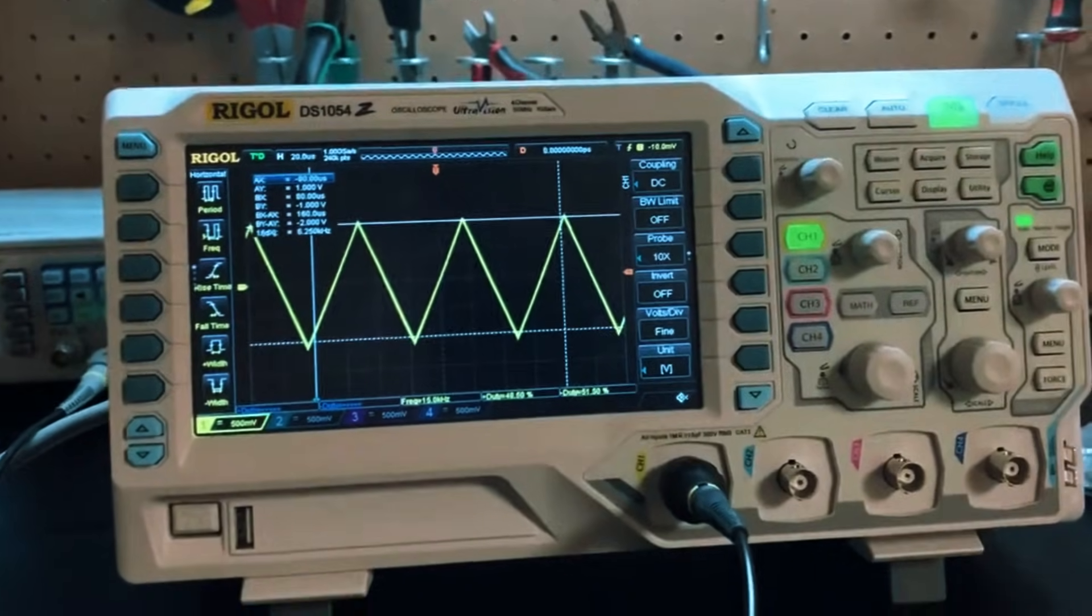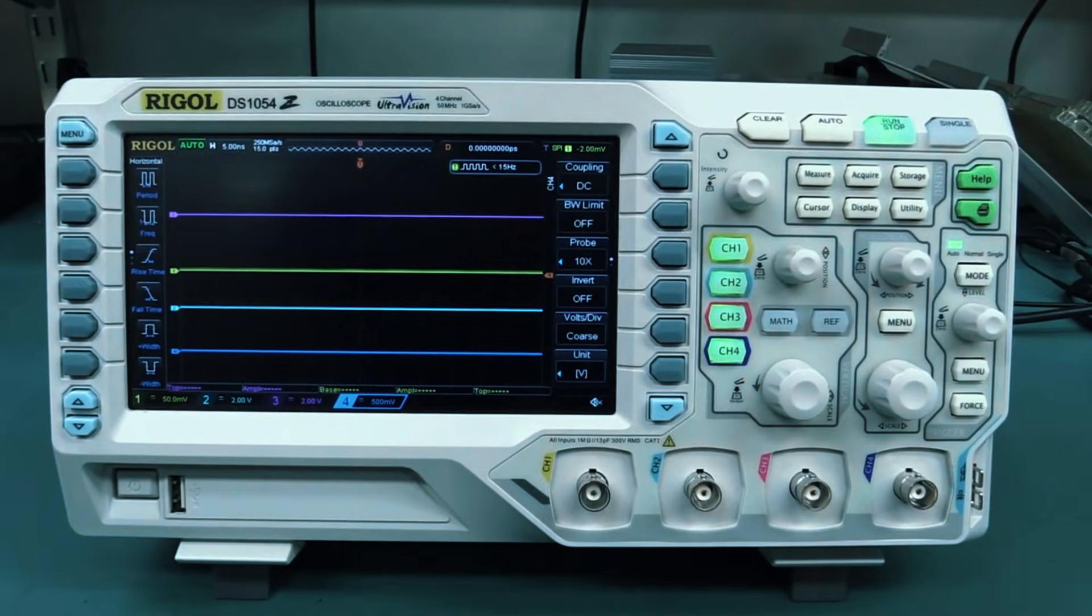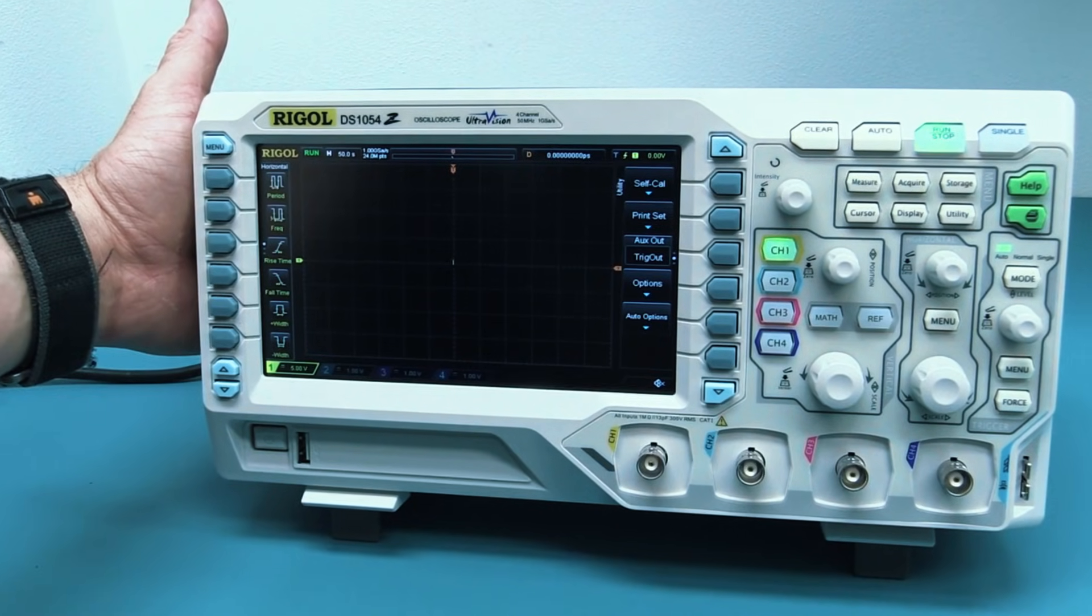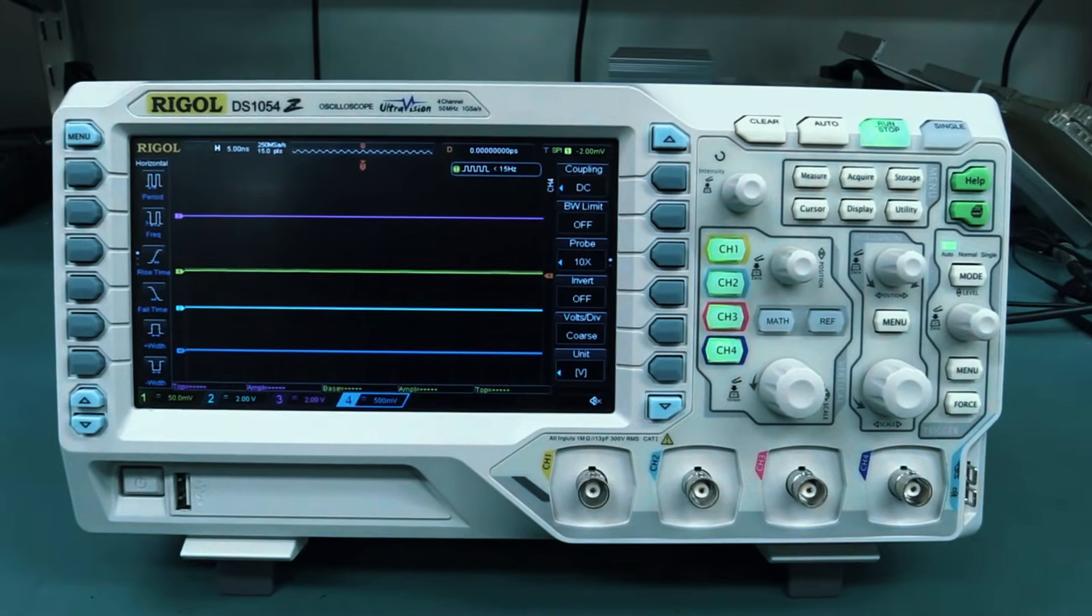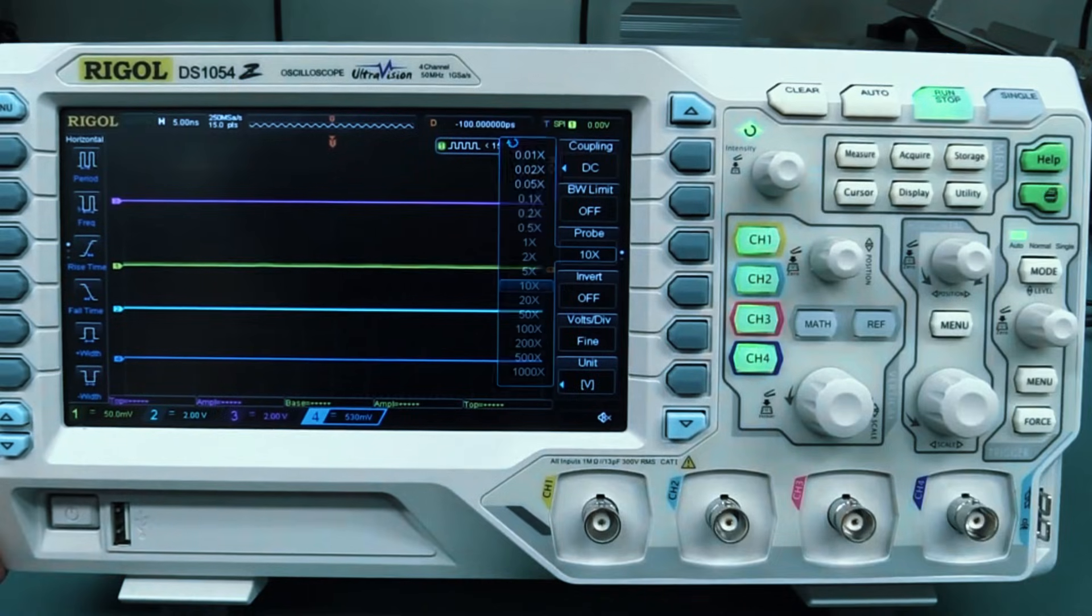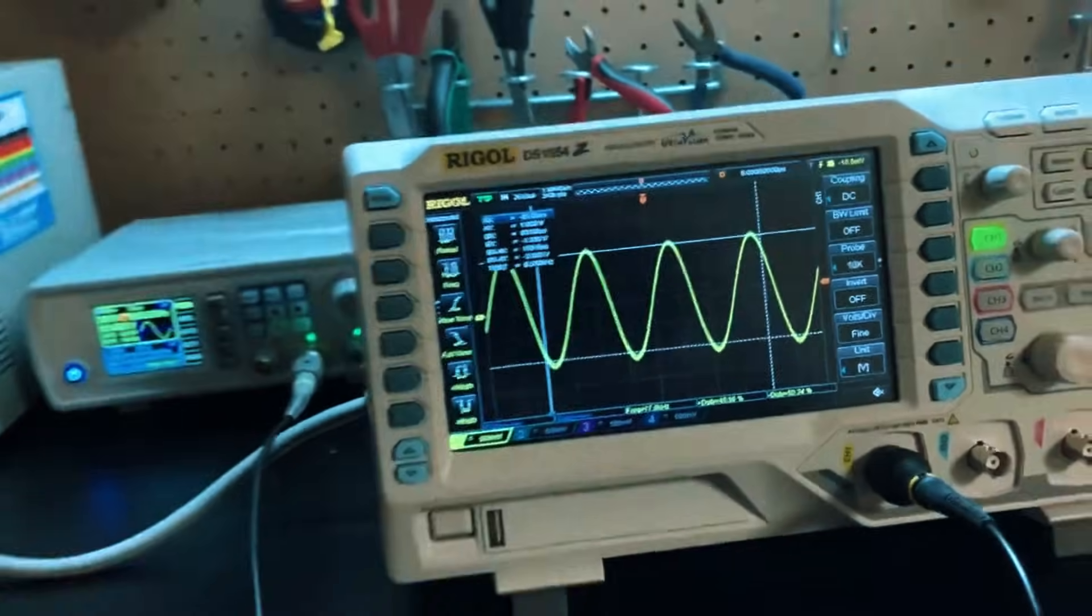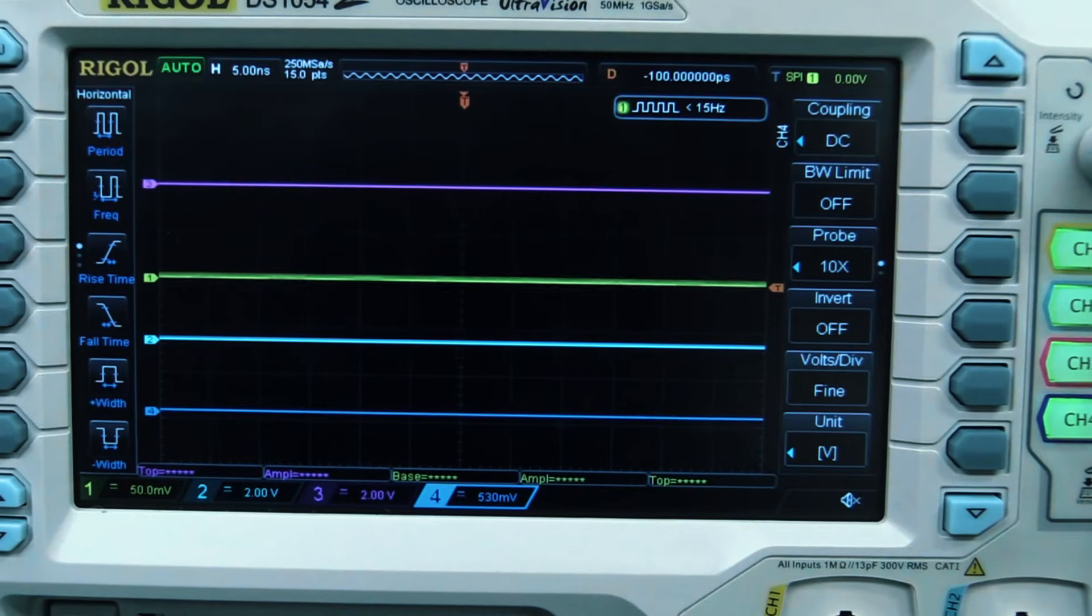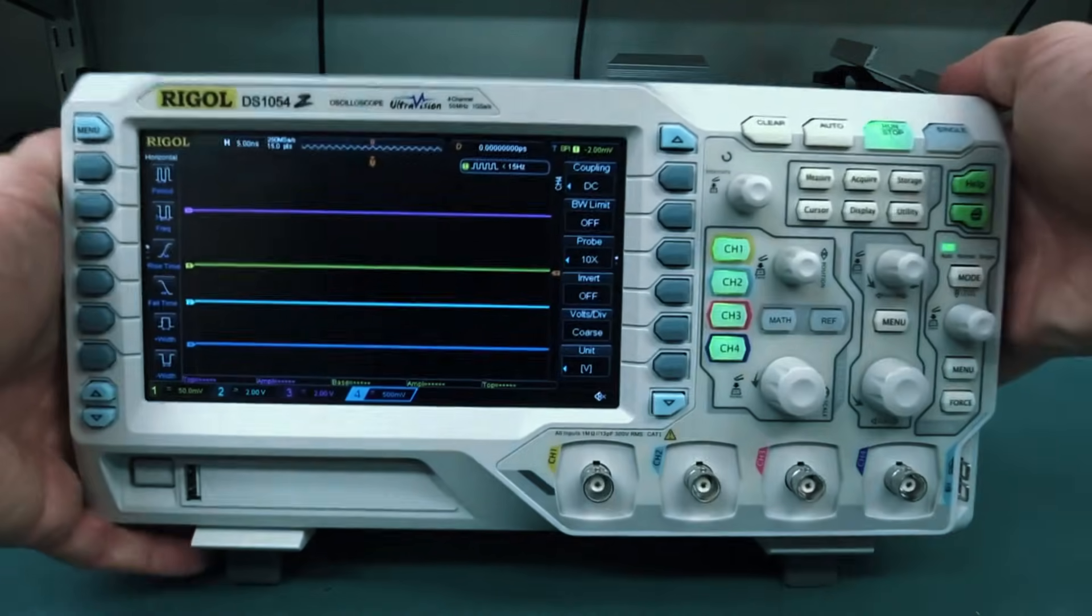Whether you're working on low-frequency analog signals or high-speed digital circuits, the clarity and accuracy of captured waveforms are top-notch. One of the most famous aspects of the DS1054Z is its hackability. With some firmware tweaks, users can unlock its full 100MHz bandwidth, effectively upgrading it to match higher-end models at no extra cost. This has made it a legend in the electronics community as it provides professional-level performance at a fraction of the price. Despite its powerful features, the interface remains user-friendly, making it accessible to both beginners and professionals. The menu layout is intuitive and the various triggering options help capture signals accurately, even in complex circuit environments.